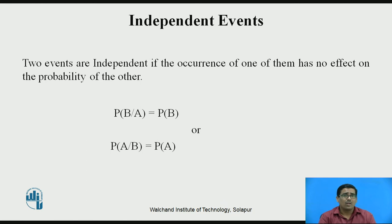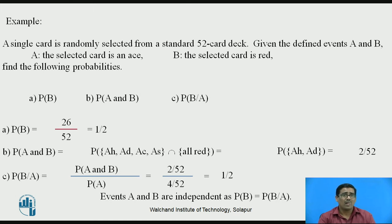Now, independent events. Two events are independent if the occurrence of one has no effect on the probability of the other. That means P(B|A) = P(B), or equivalently P(A|B) = P(A). Example: a single card is randomly selected from a standard 52-card deck. Given events A — the selected card is an ace — and B — the selected card is red — find P(B), P(A and B), and P(B|A) using the same procedure.